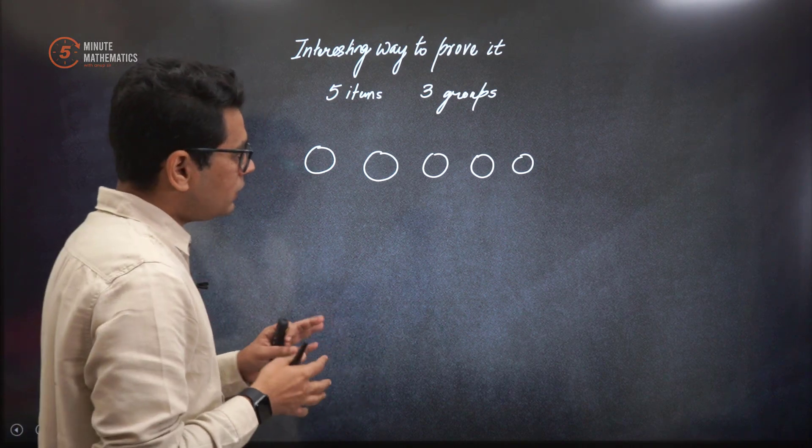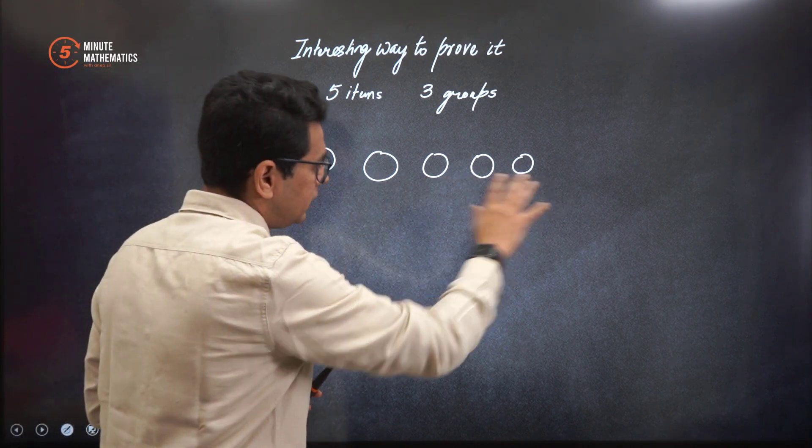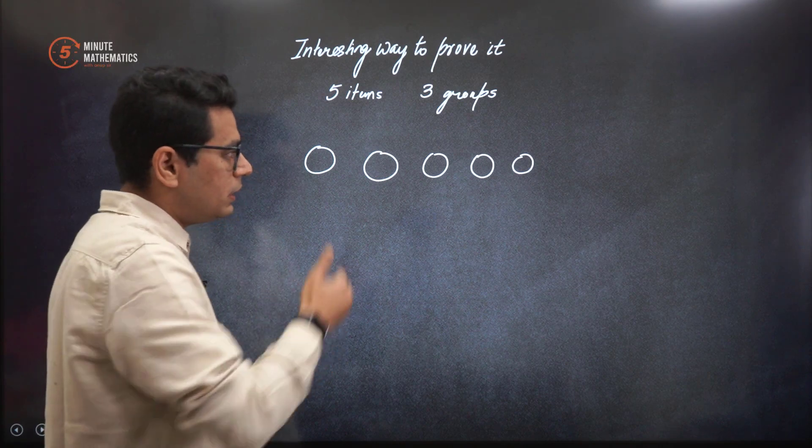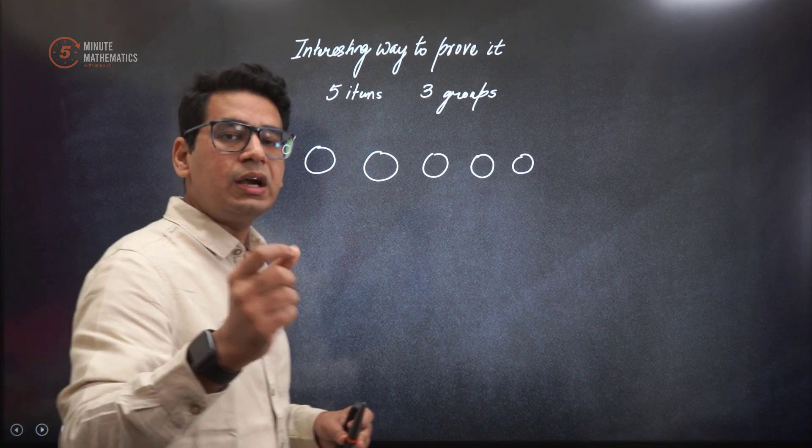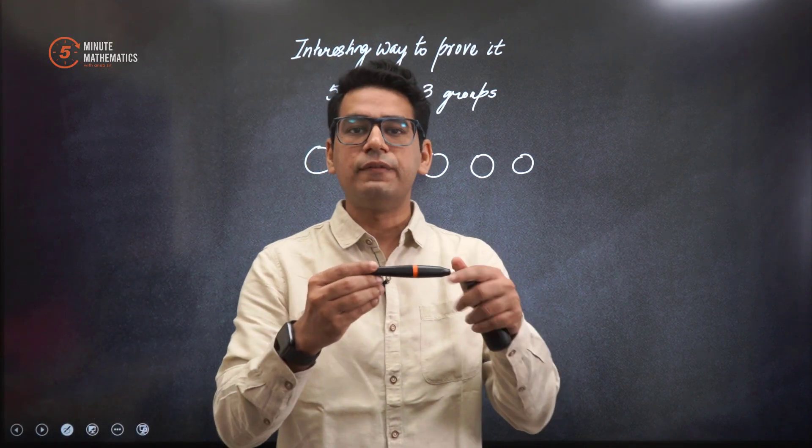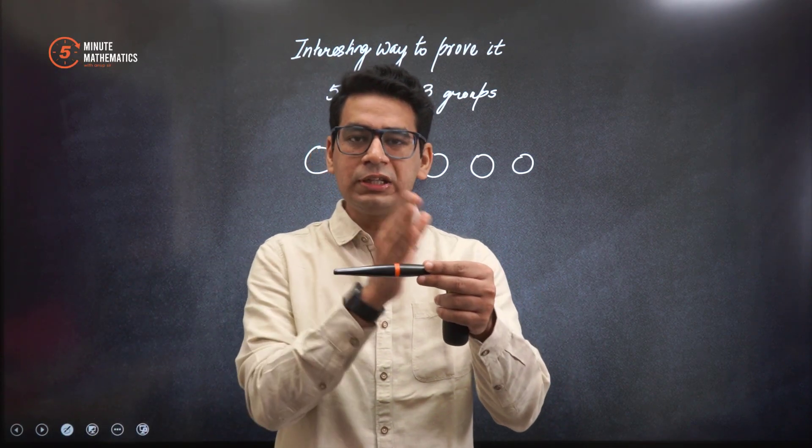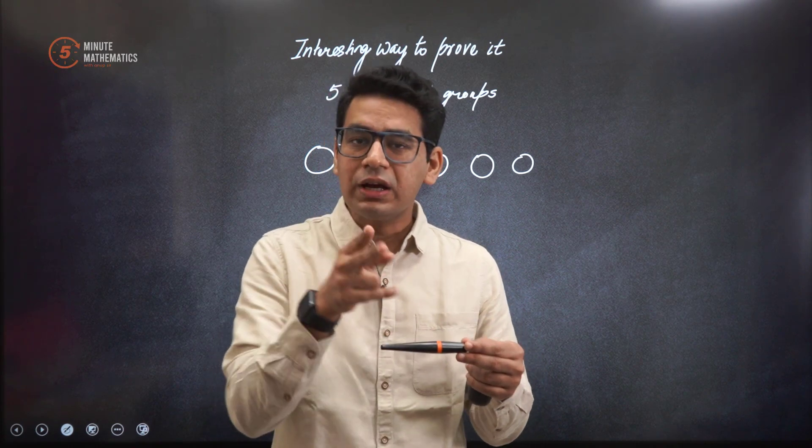For 3 groups, so now that means these balls are made. Now you want them to be segregated in 3 parts. So now understand like this: this is a thread, right? If you want to cut the thread in 3 parts, how many cuttings will you have to do?